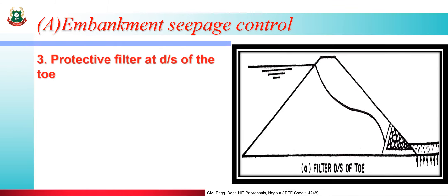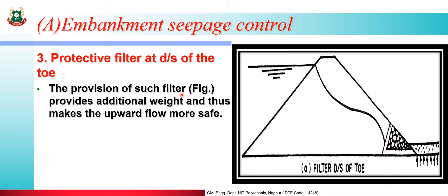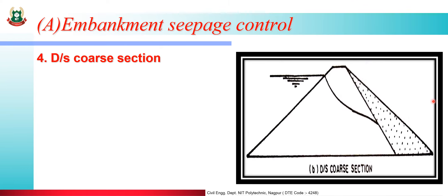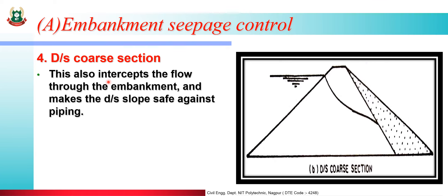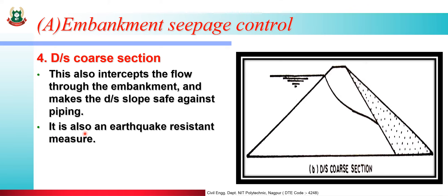The protective filter downstream of the toe provides additional weight and thus makes the upward flow more safe. The downstream coarse section also intercepts the flow through the embankment and makes the downstream slope safe against piping — that is, the seepage of water. It is also an earthquake-resistant measure.